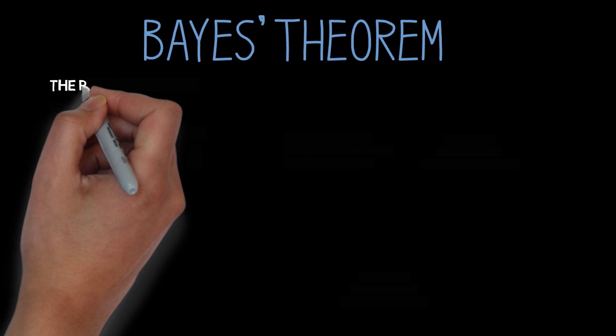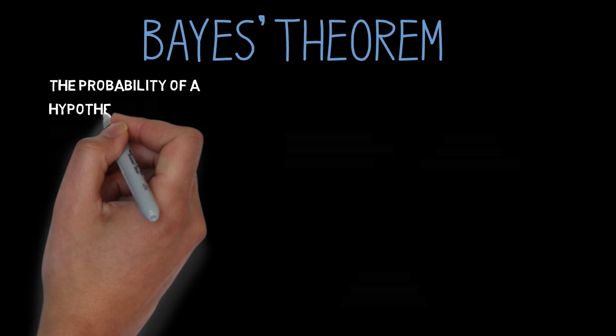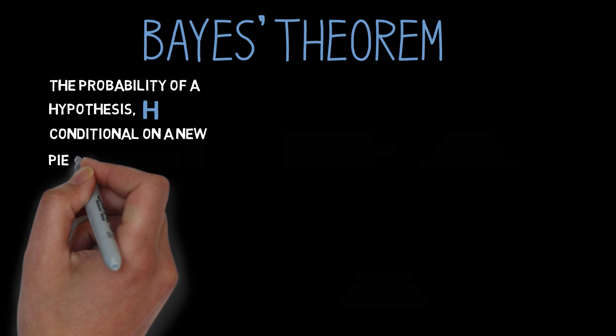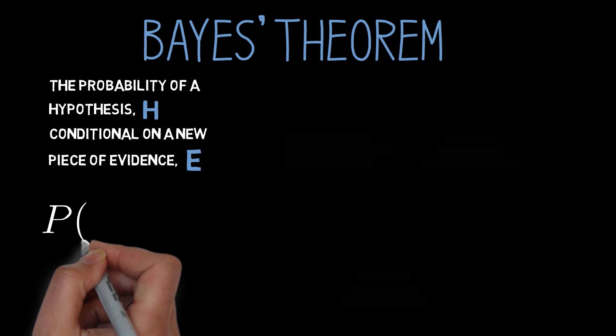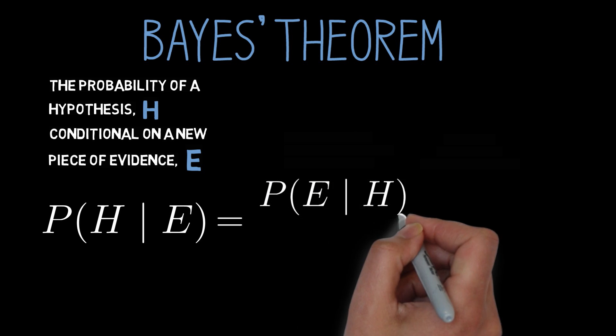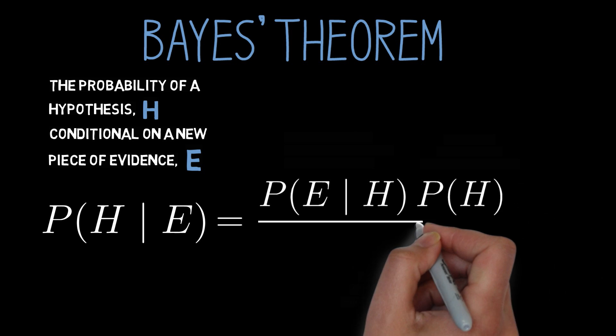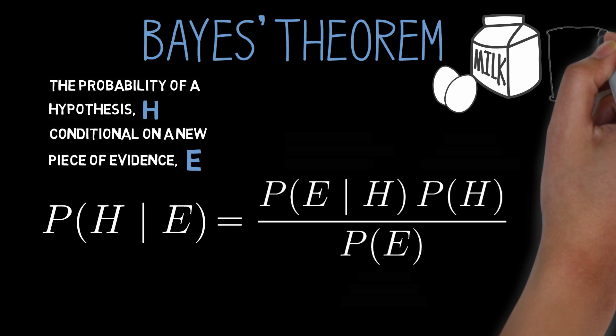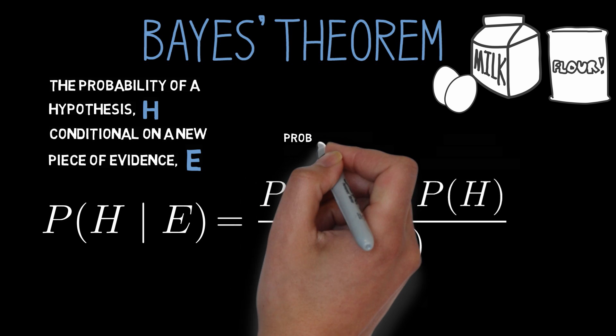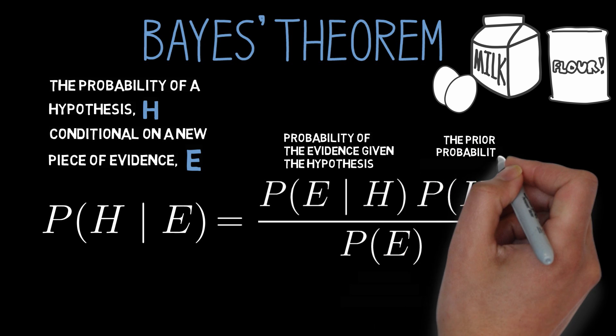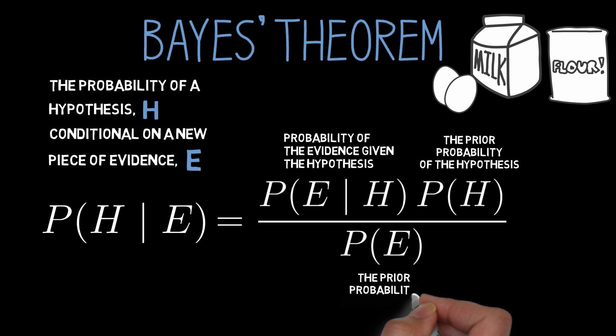So what does Bayes' theorem actually say? Remember our shorthand. Your probability in some hypothesis, let's call it H, conditional on some new piece of evidence, let's call it E, is written P of H given E. Here's what Bayes' theorem tells us. P of H given E equals P of E given H times P of H divided by P of E. In other words, it tells us the three ingredients that go into the probability of a hypothesis conditional on some evidence. The probability of the evidence conditional on the hypothesis, the prior probability of the hypothesis, and the prior probability of the evidence.